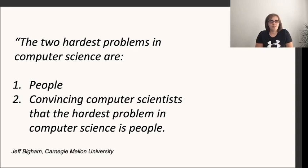So Jeff Bigham has this saying, he's a current professor at CMU, but he has this saying that the two hardest problems in computer science are people and convincing computer scientists that the hardest problem in computer science is people. And that's because we often assume that people will behave the way we think they should or we expect them to and the way we would behave.